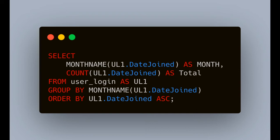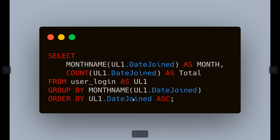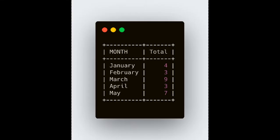So January will have four records, February will have three records, and so on. After that there is an ORDER BY, so we need to put this in a particular order. We have ordered by date_joined so the months appear in order — January, February, March — in ascending order one, two, three, four. Here is the output, so you will get a better idea from this query result.